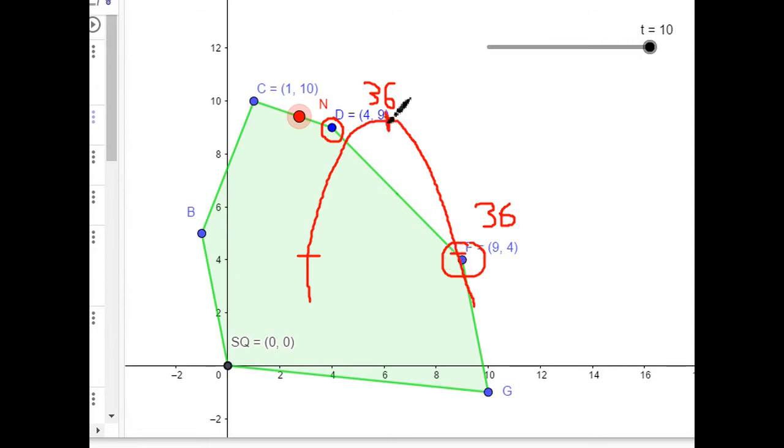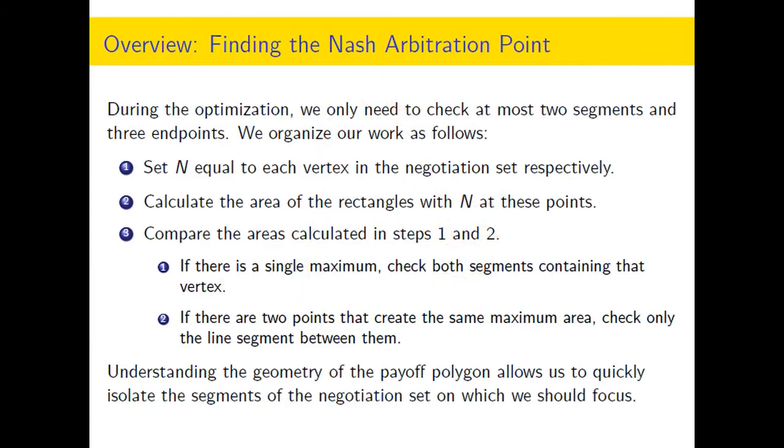So at 36 here and at 36 here, that means that the maximum of that parabola is between them. This is a downward facing parabola. And the only way you can have two similar Y values is if the vertex, a higher maximum area, is between them. So that's what's going on with the recommendation that when there's two points that create the same maximum area, then I only have to check that line segment that's between them.